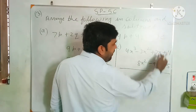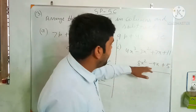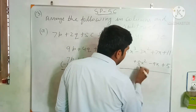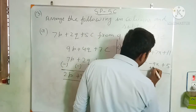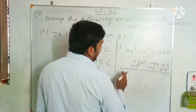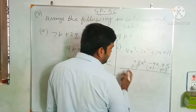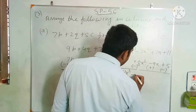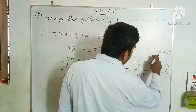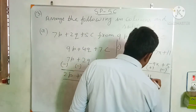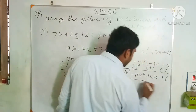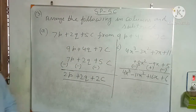Column of x², column of x, column of constant term. Now change the sign of each term of the lower expression: plus 8x² becomes minus, minus 9x becomes plus, plus 5 becomes minus. From 4x³ nothing is subtracted, so result is 4x³. Minus 3 minus 8 gives minus 11x². Plus 7 plus 9 gives plus 16x. Plus 11 minus 5 gives plus 6. Answer: 4x³ minus 11x² plus 16x plus 6.